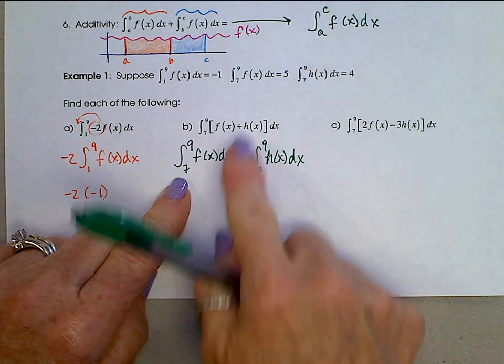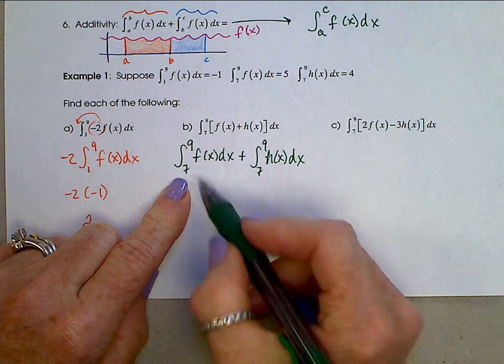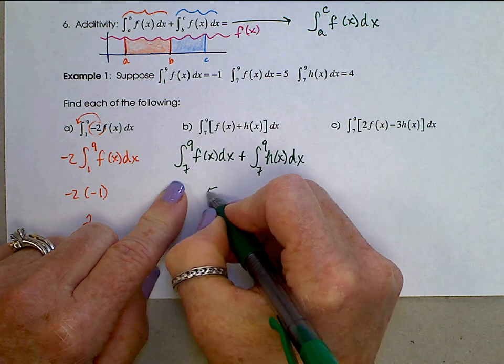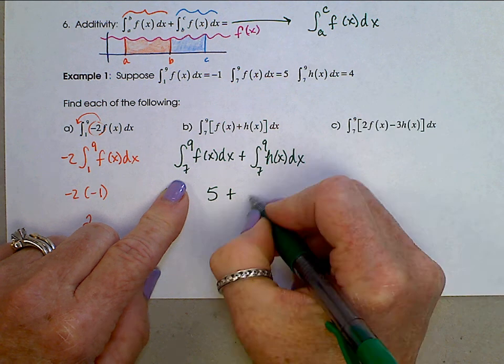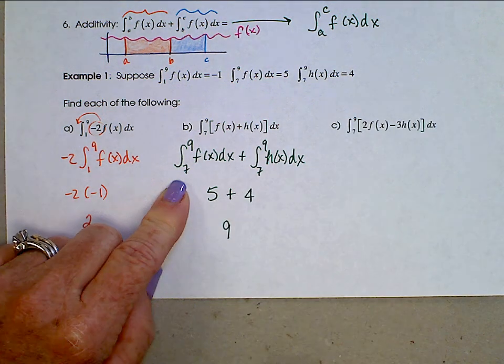And pulling these values then from the given information, 7 to 9 was a 5 plus 7 to 9 of an h was 4. So we have 9.